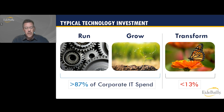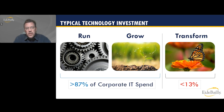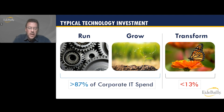Gartner has created a model where they've looked at the amount of IT spend and categorized it into three different categories: run, grow, and transform. What I want to call out here is that the first two categories — run and grow — actually make up on average more than 87% of corporate IT spend. That's a significant portion, and for those of you that manage IT spend budgets, you probably know this firsthand. The transform category is less than 13% on average.